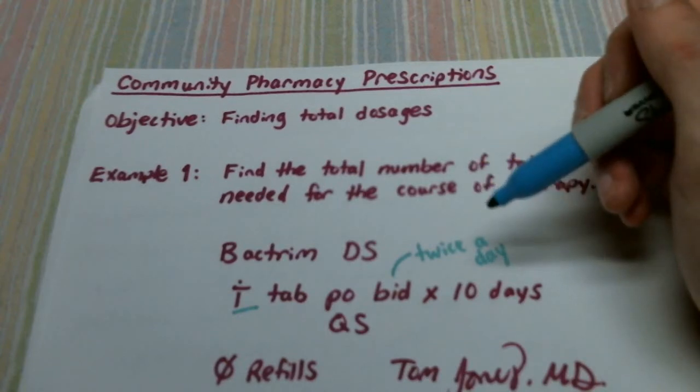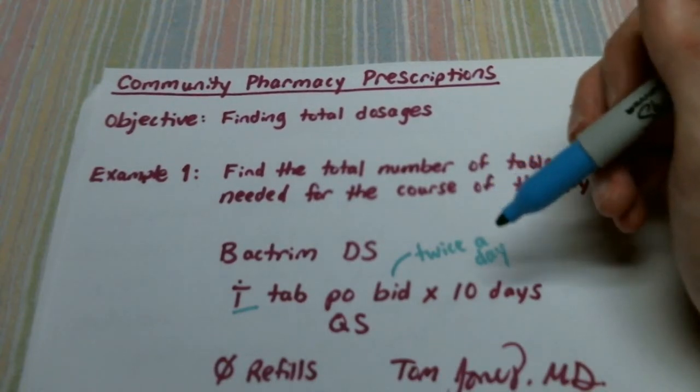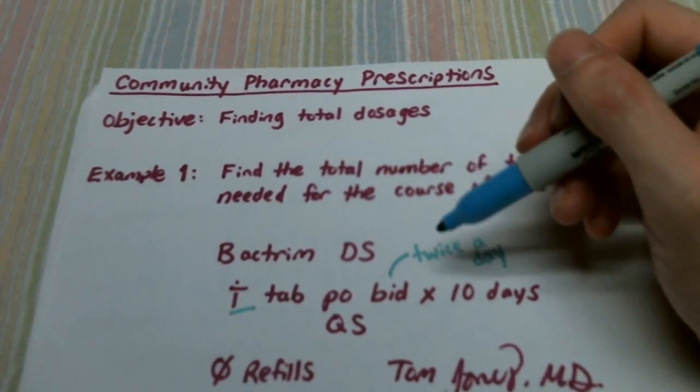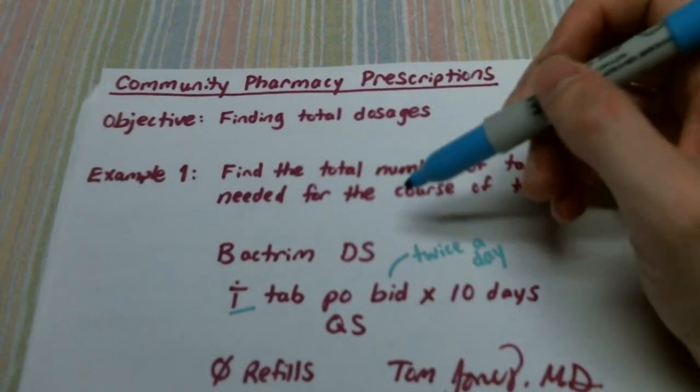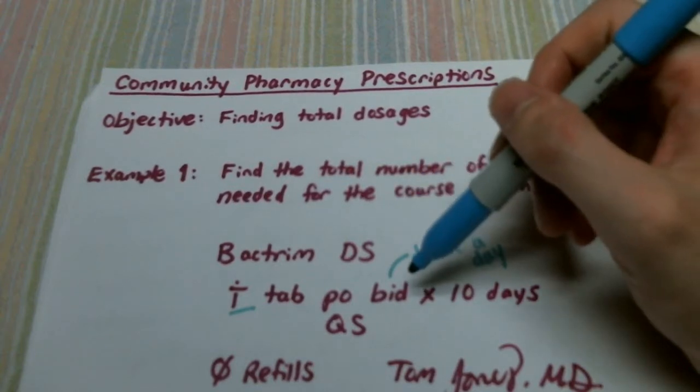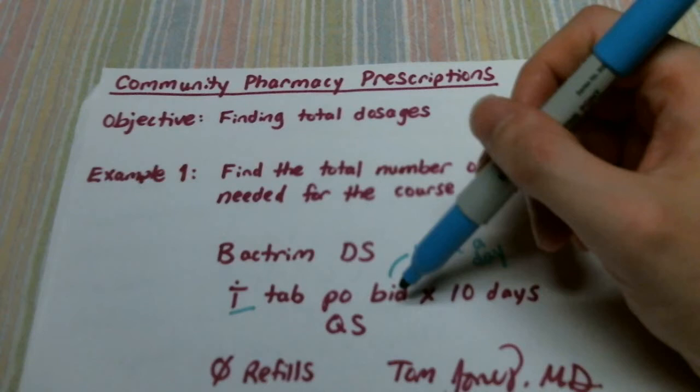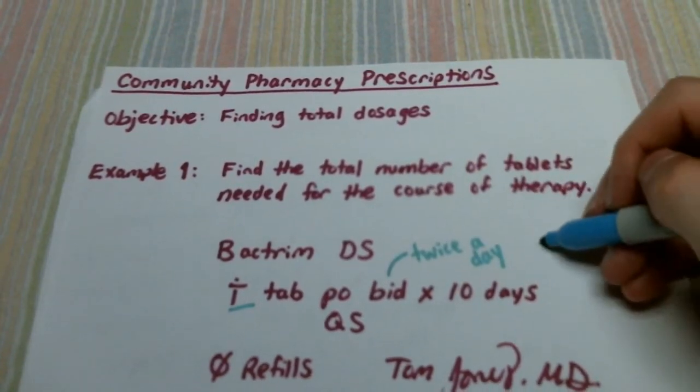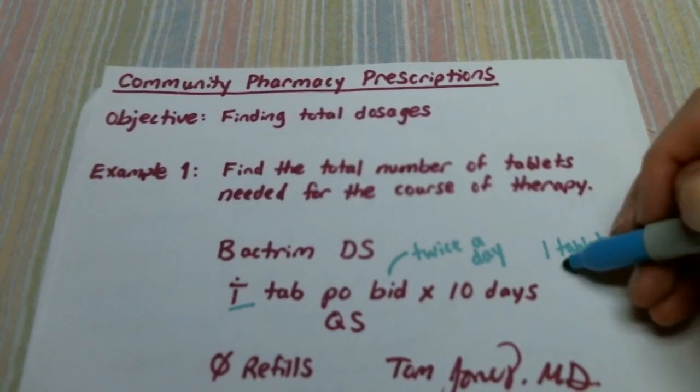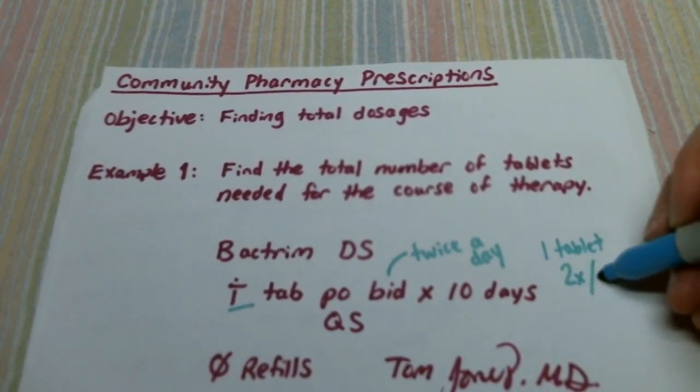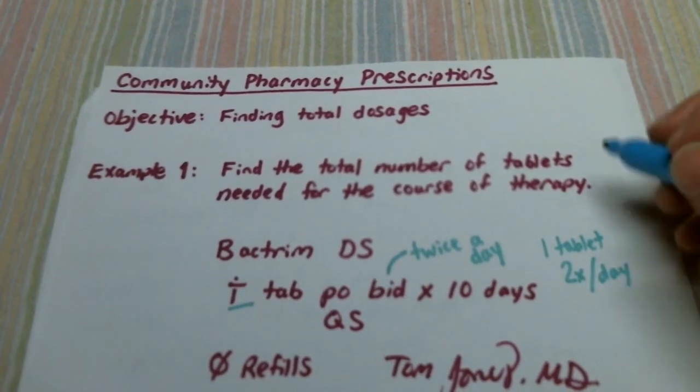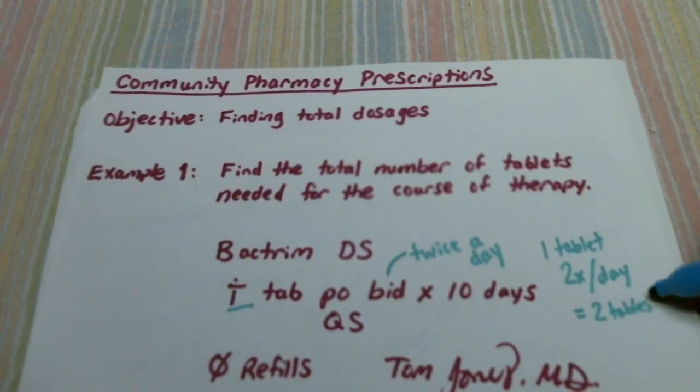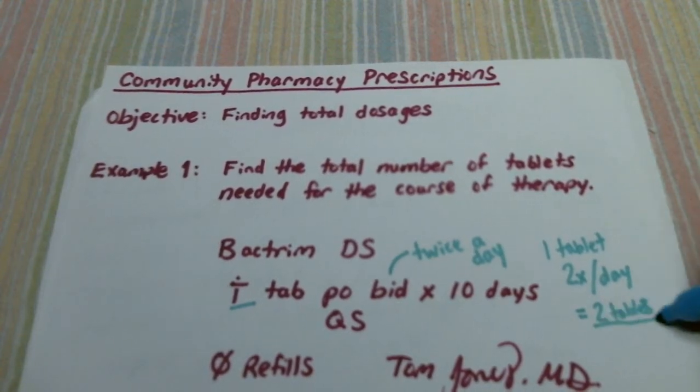It's very simple math. What the prescriber has left it up for the pharmacist to do: in this case, the patient is taking one tablet twice a day. So one tablet, twice a day or two times a day. When we multiply that out we get two tablets, two tablets per day.